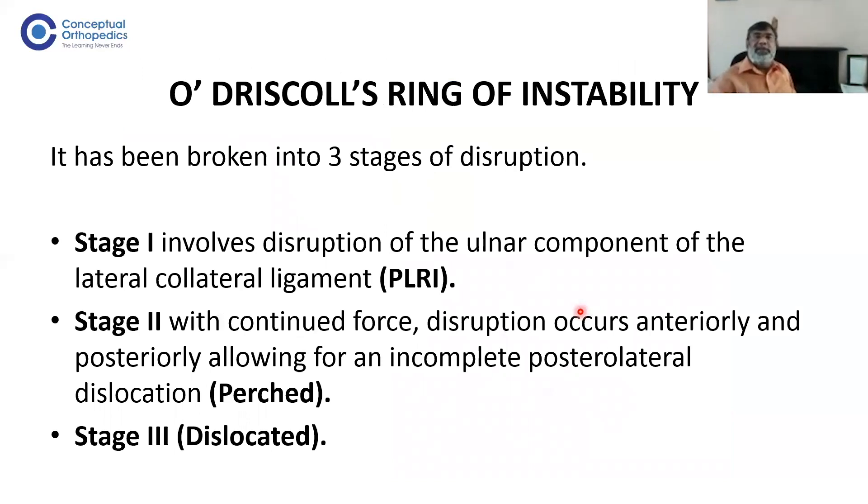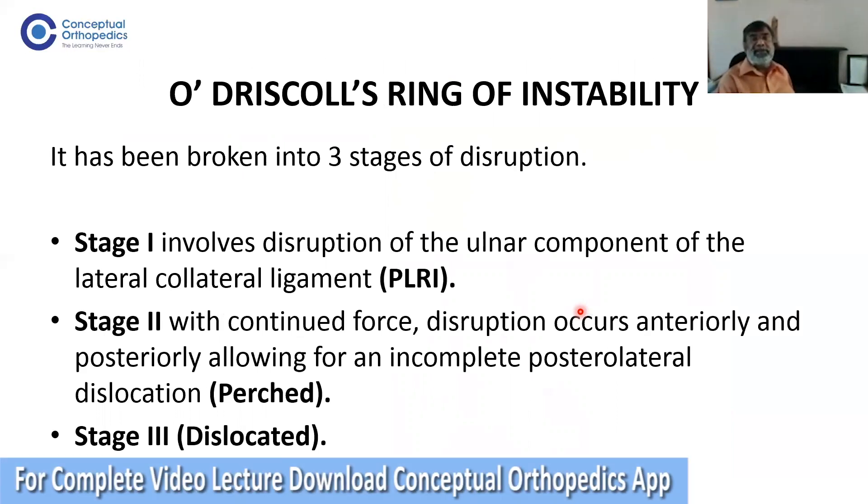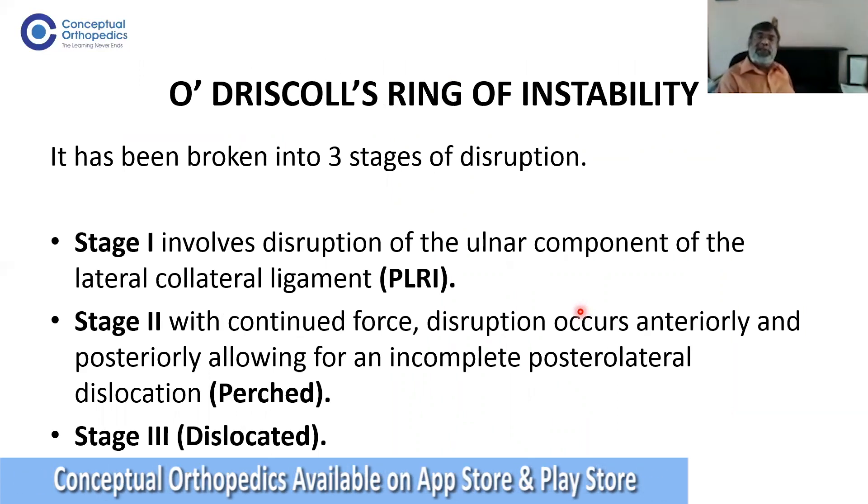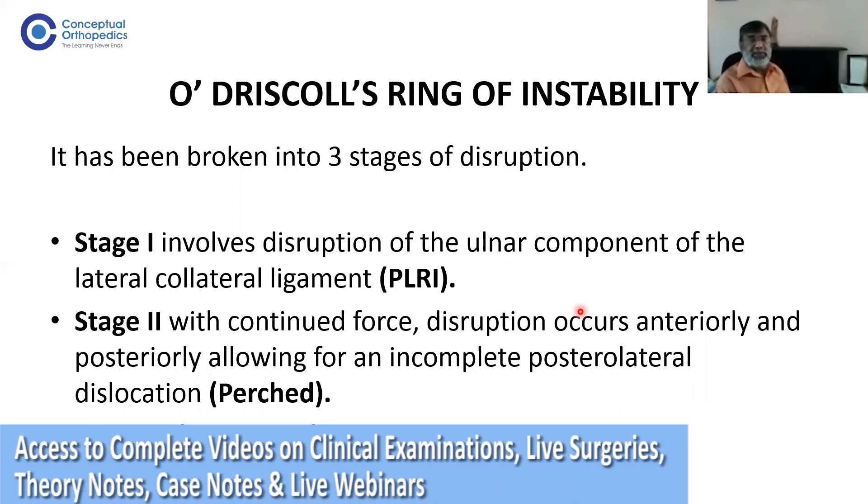O'Driscoll described in detail what happens in stage 1: disruption of the ulnar component of the lateral collateral ligament (PLRI), which causes posterolateral rotatory instability. Stage 2, with continued force, disruption occurs anteriorly and posteriorly, causing incomplete posterolateral dislocation.